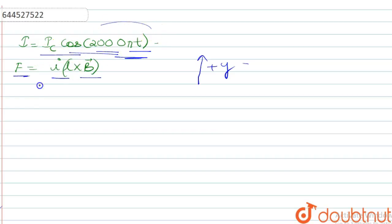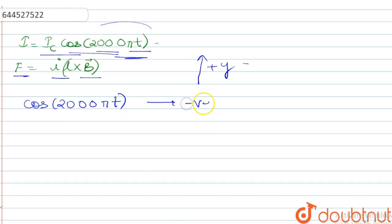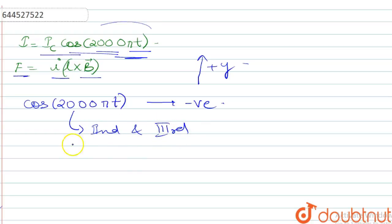cos(2000πt) will become negative when it is lying in the second quadrant and third quadrant. So we can write: 2000πt is greater than or equal to π/2 and less than or equal to 3π/2.